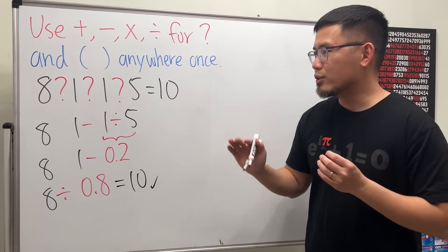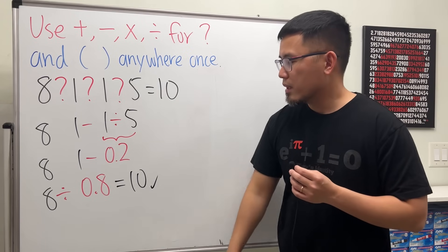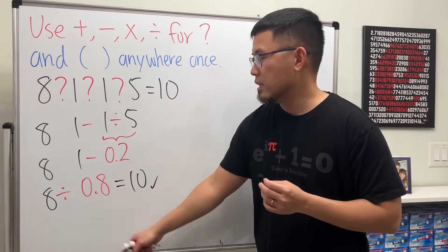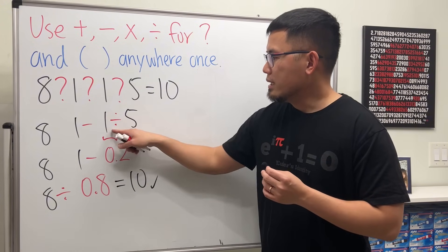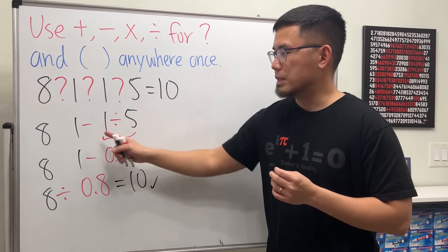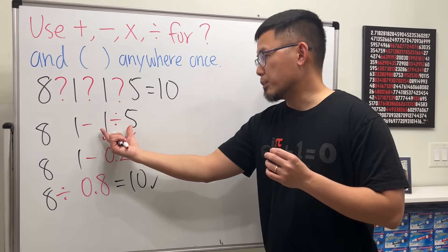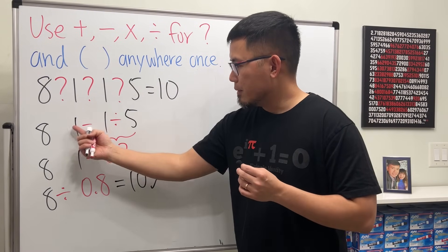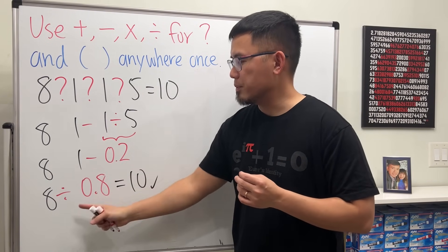But now we just have to make sure we write the expression carefully. We want to have division 8 divided by 0.8. Earlier, 1 divided by 5, this will happen first before the subtraction, so we don't need the parentheses here. But I want to have this right here happen first before this division.